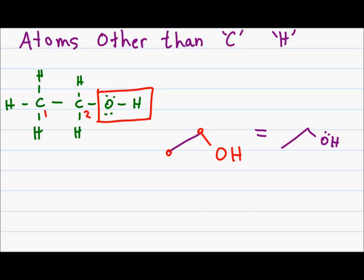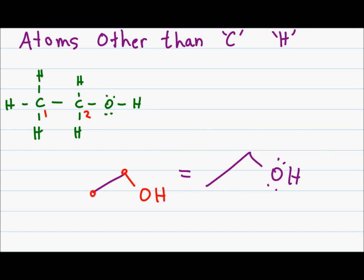Now remember that oxygen has two lone pairs of electrons, so don't forget to add those in. Let's look at this molecule one more time. We have the two carbon atoms and then we have the OH group. Notice that this is a carbon atom. This line represents the bond between the carbon and oxygen, meaning this is not a carbon atom. And that is simply where the oxygen attaches to this molecule.